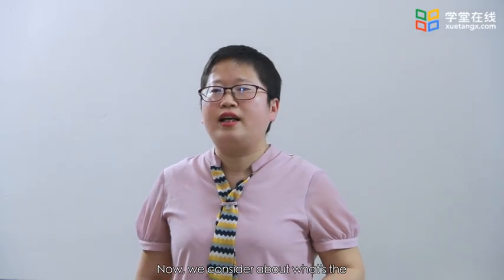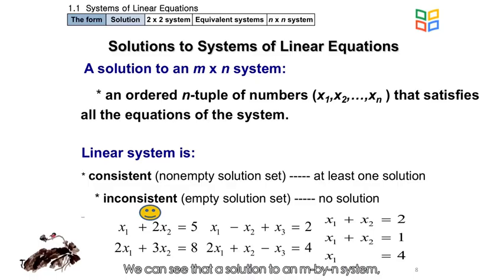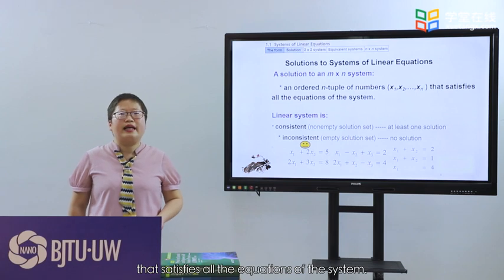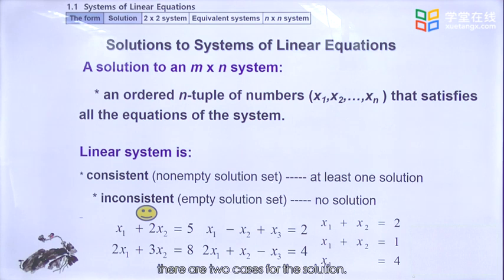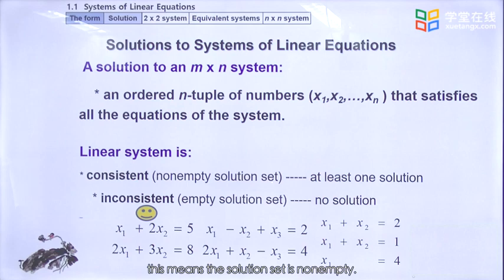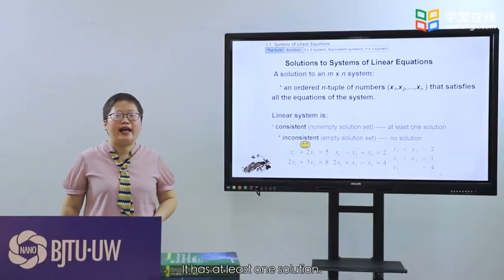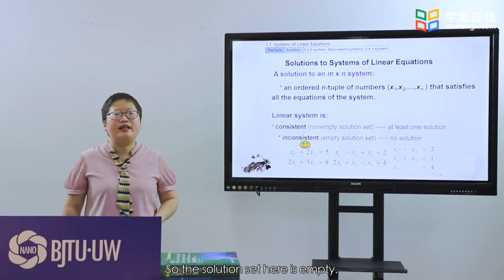Now we consider the solution to this system. A solution to an m by n system is an ordered n-tuple of numbers x1, x2 through xn that satisfies all the equations of the system. For the linear system, there are two cases: the first case is consistent, meaning the solution set is non-empty and has at least one solution. The second case is inconsistent, where the solution set is empty and there is no solution at all.